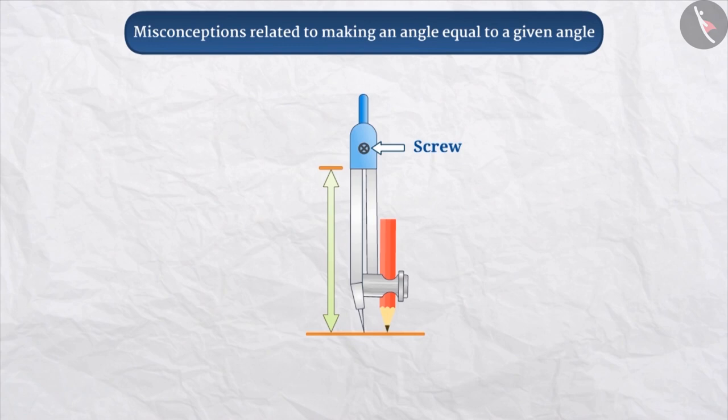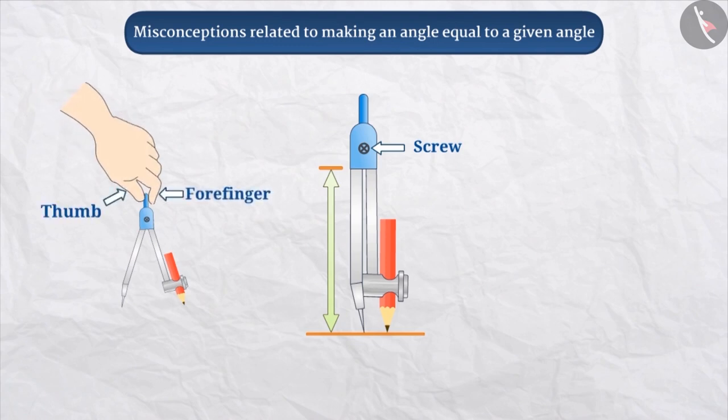The pencil should also be fixed properly in the compass so that it does not slide while drawing an arc or circle. In order to draw a circle, this part of the compass is held between the forefinger and thumb in this way.